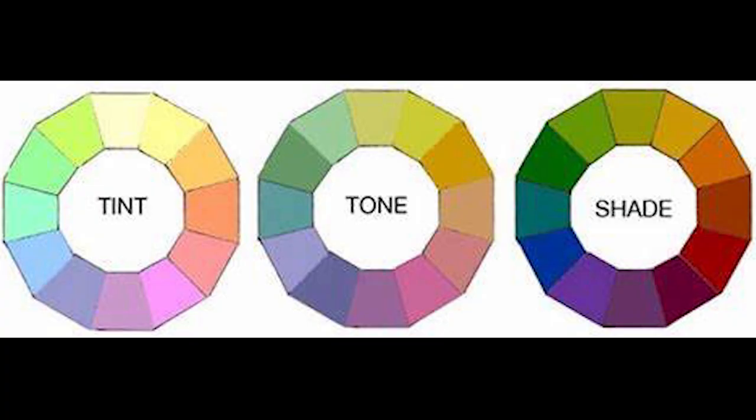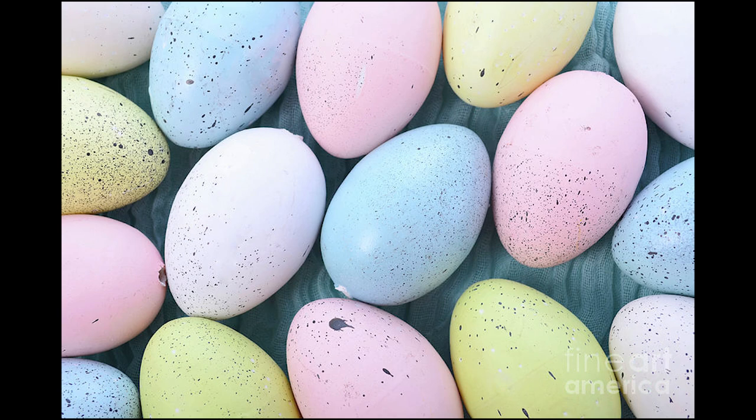Secondary colors are made by taking two of the primary colors and combining them together to create the rest of the colors in the spectrum. One caveat: white and black are considered neutral colors and are not really on the color wheel. However, you use those for making tonal changes. White gives you all your tints — the lightness of colors — like your sky blues, your pinks, your pastel yellows — basically anything Easter-themed. That's a tint.